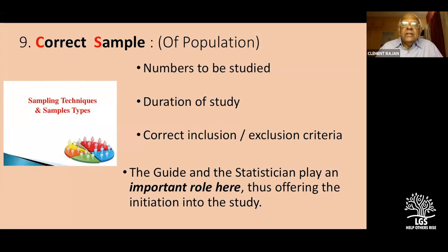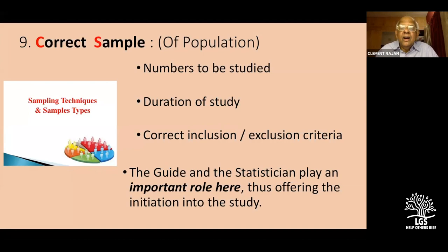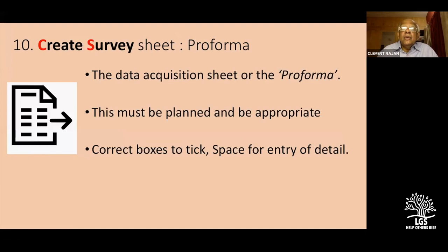The correct inclusion and exclusion criteria need to be put down so that you know what comes into your population and what does not. I often find PGs collecting data from patients outside their study and then trying to fit them in. You must be very careful knowing your inclusion and exclusion criteria. The guide as well as the statistician is very important at this stage to offer the initiation of the study.